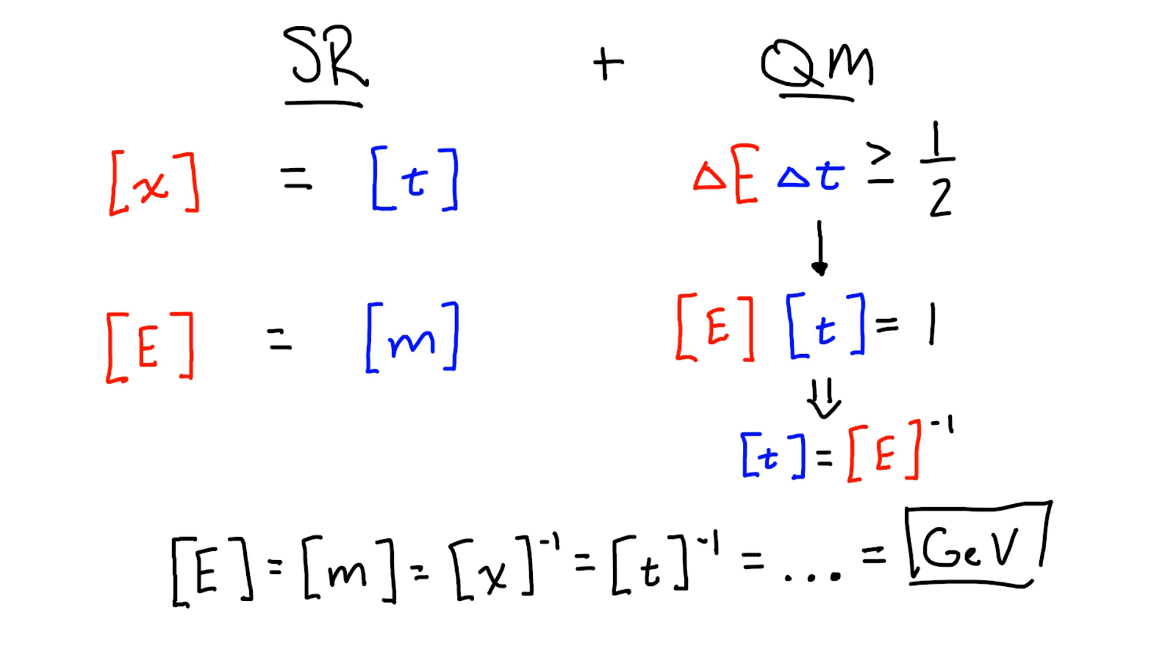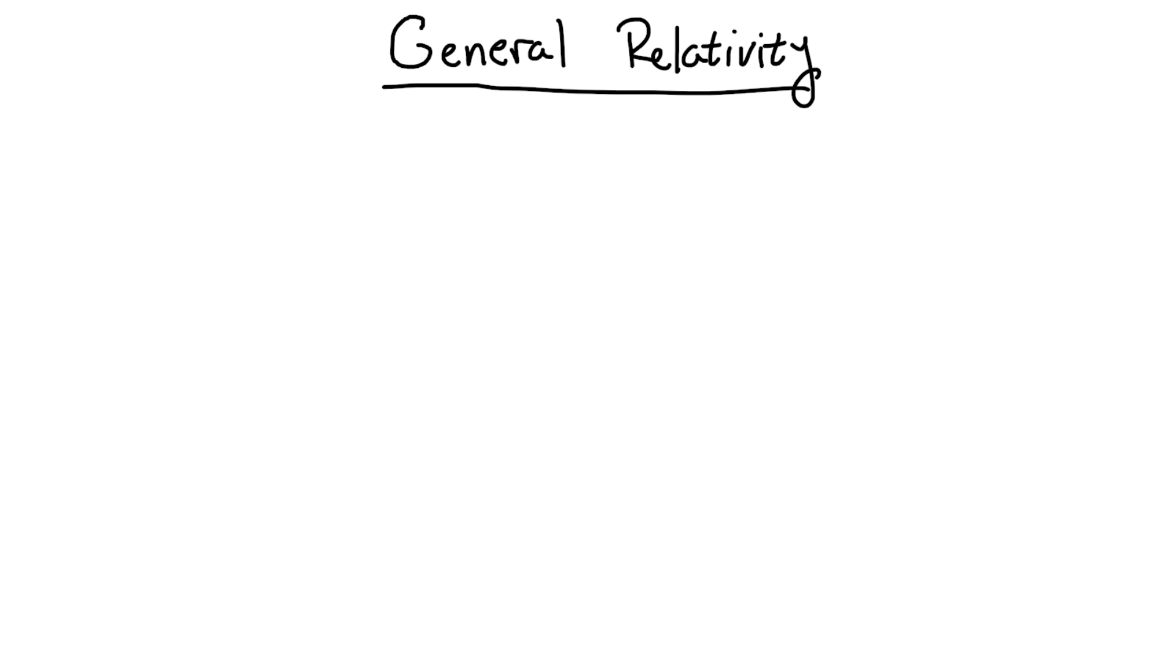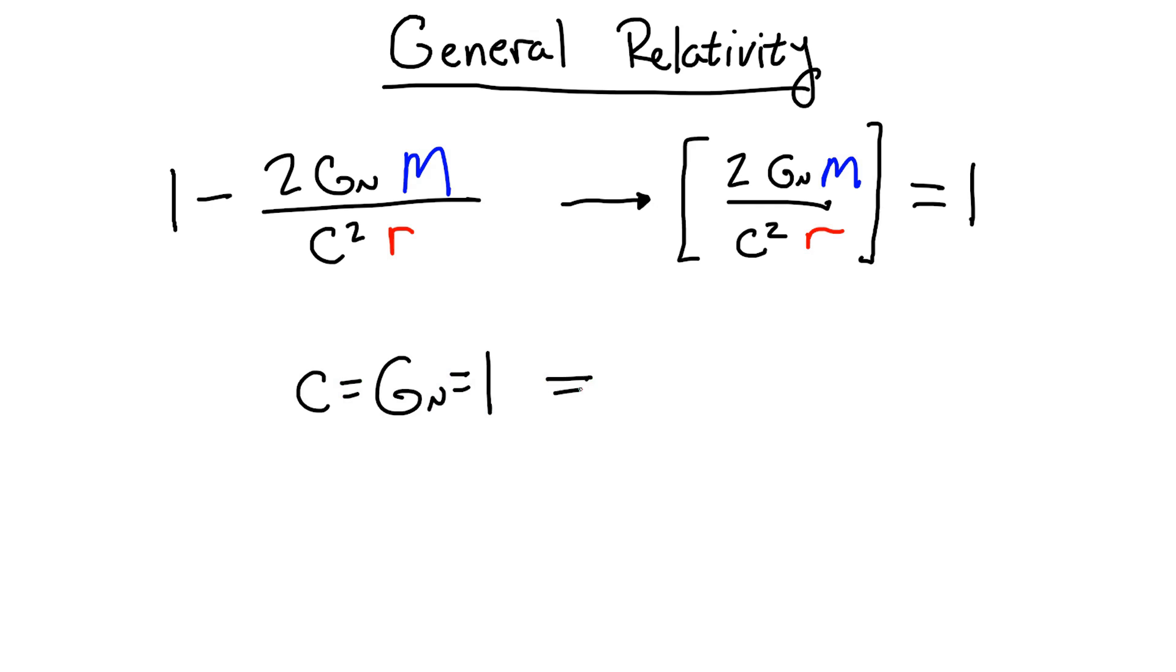However, not all theories agree. For instance, in general relativity, we end up with terms that look like this, where m is a mass and r is a distance. Since the 2gm over c squared r term is subtracted from 1, a dimensionless number, this whole term should be dimensionless as well. Now if we choose our natural units so that g and c are equal to 1, we see that mass and distance have to have the same dimensions.